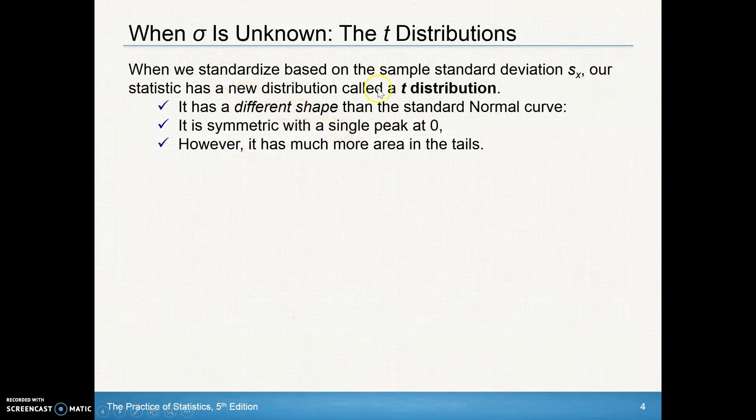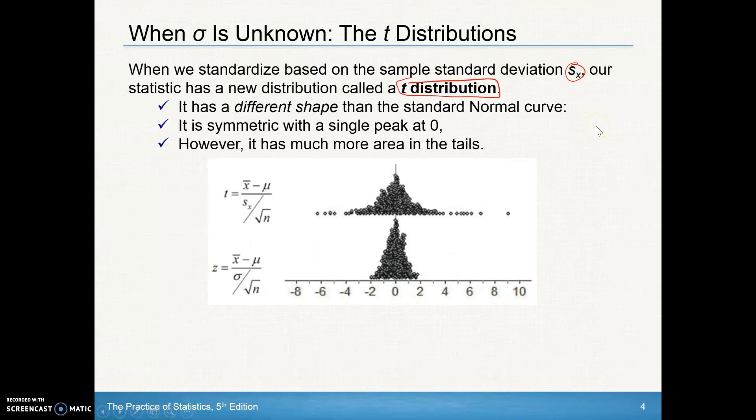When we standardize based on the sample standard deviation s sub x, our statistic has a new distribution called a t-distribution. When we're using this in our standard z-score, now we're going to use a t-distribution rather than a z-distribution. It does have a different shape than the standard normal curve, though it is symmetric with a single peak at zero. However, it has much more area on the tails. Here's a t-distribution. We've got a little bit more area on the tails, as opposed to a z-distribution that's a little bit tighter, a little bit higher peak, and has very little area on the tails.